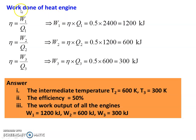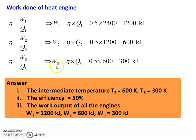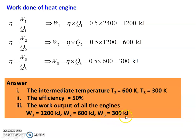Work done for each engine. W1 equal to Eta into Q1 equal to 0.5 into 2400 equal to 1200 kilojoules. Second engine: W2 equal to Eta into Q2 equal to 0.5 into 1200 equal to 600 kilojoules. Third engine: W3 equal to Eta into Q3 equal to 0.5 into 600 equal to 300 kilojoules. The answers to the problem: intermediate temperatures T2 equal to 600 Kelvin and T3 equal to 300 Kelvin, efficiency of each engine is 50%, work output W1 equal to 1200 kilojoules, W2 equal to 600 kilojoules, and W3 equal to 300 kilojoules.